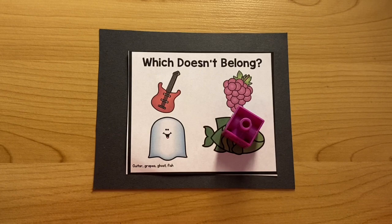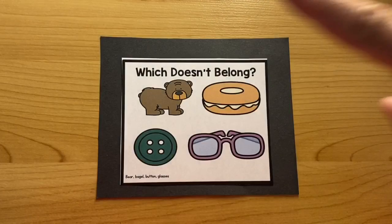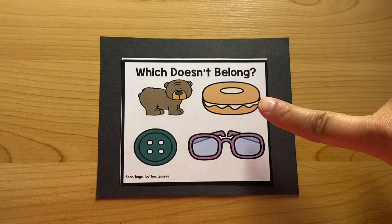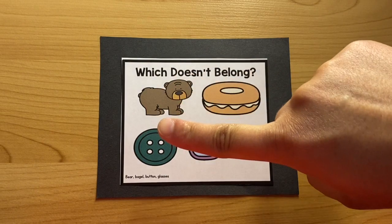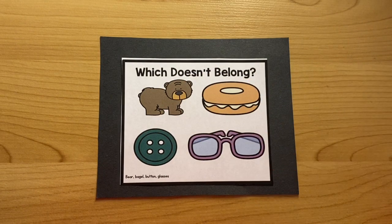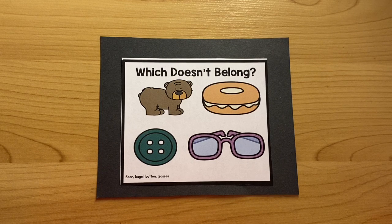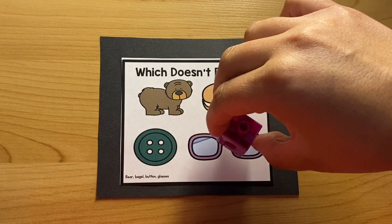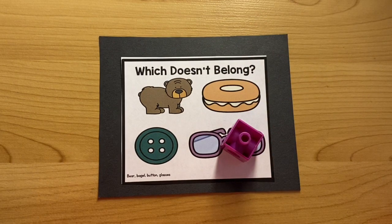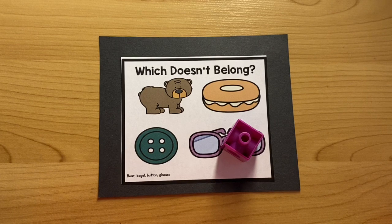Next one. Bear. Bagel. Button. Glasses. Which word doesn't belong? Glasses. That's right. Glasses doesn't belong because glasses begins with the sound G. And the rest of the words begin with the sound B. Good job.